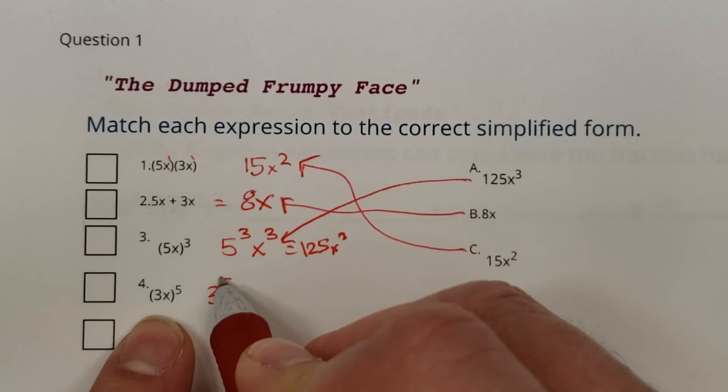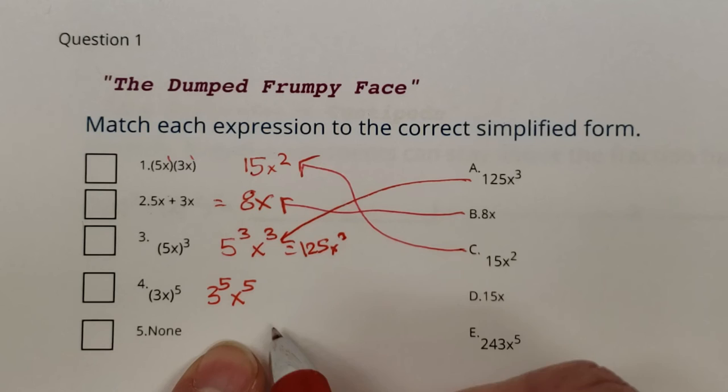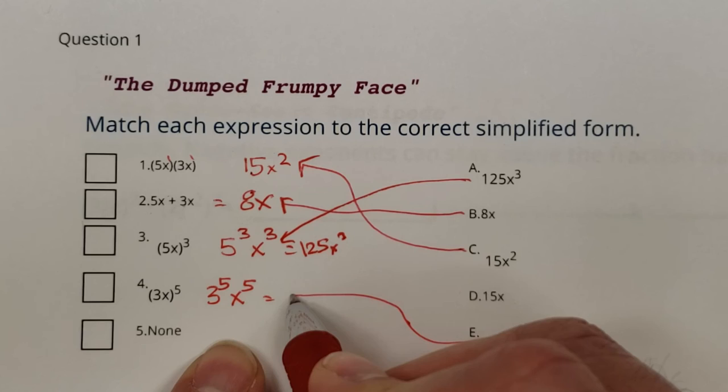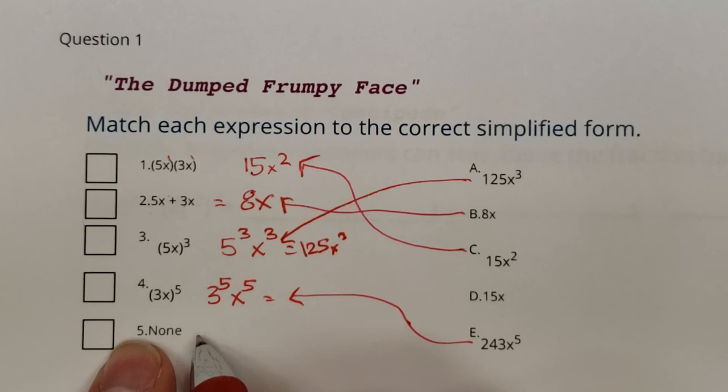We have 3x to the fifth power. That would be 3 to the fifth, x to the 5. Ooh, 3 to the fifth power, I think, is a big old number. I think it's 243 x to the fifth. So here we go. Right there. We've got it. I'm going to write it out. And then 15x. None of them turn into 15x. So there she goes right there.